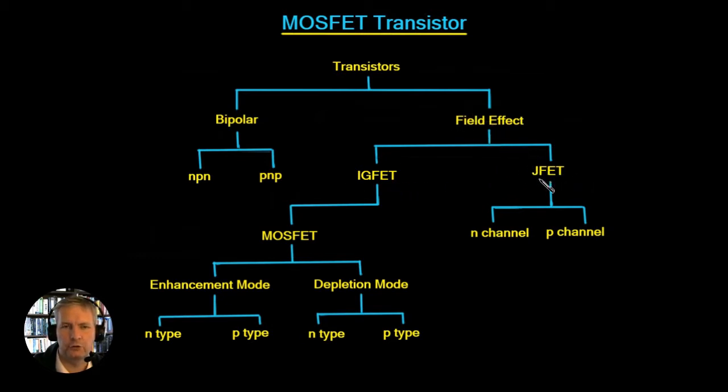Now JFET stands for Junction Field Effect Transistor and this is going to have an N channel and a P channel. Again we're not interested in this type although we might mention it through the course. The type of transistor we are interested in is the IGFET and that stands for Insulated Gate Field Effect Transistor. Now the most prevalent type of IGFET is going to be the MOSFET and this is our Metal Oxide Semiconductor Field Effect Transistor.